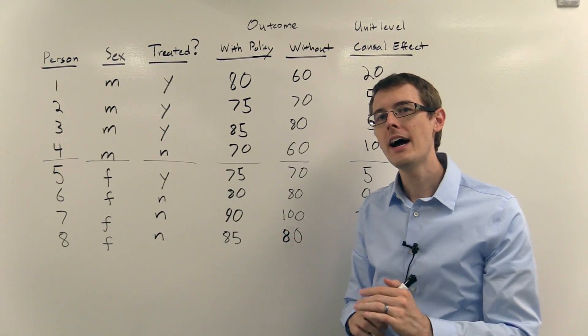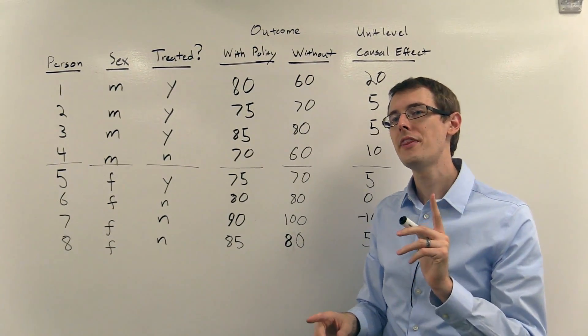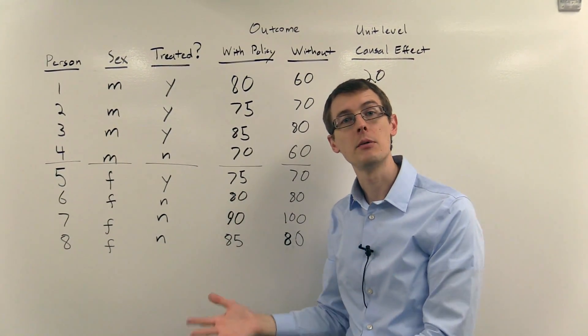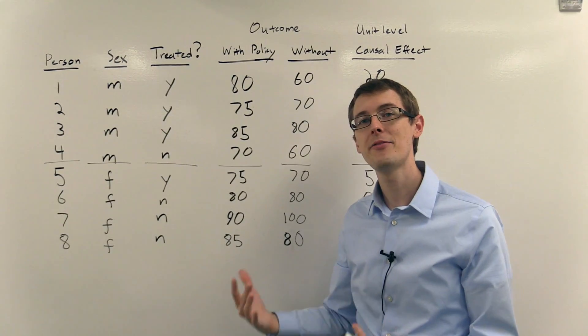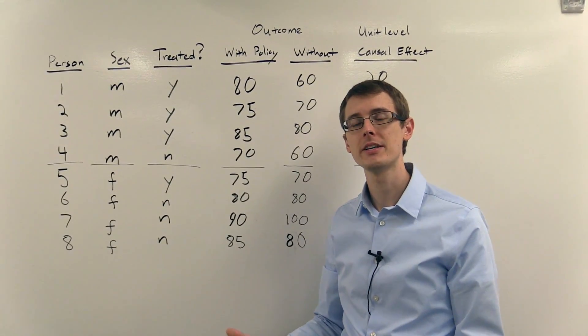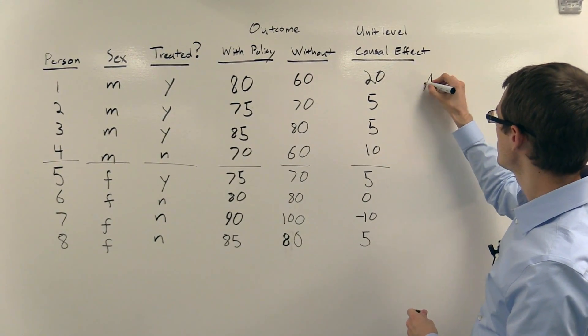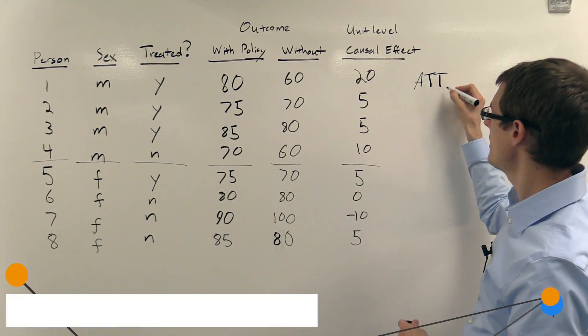So that's what we did before. Now, what's new? We can think about the treated people as a particular subset of people, the people who were treated. And we can define the average treatment effect for those people. So the average treatment on the treated, ATT,